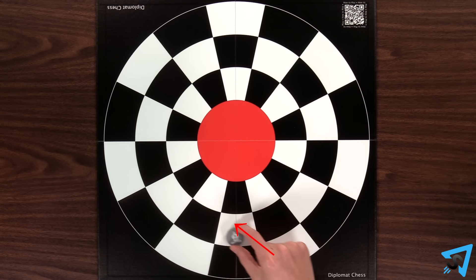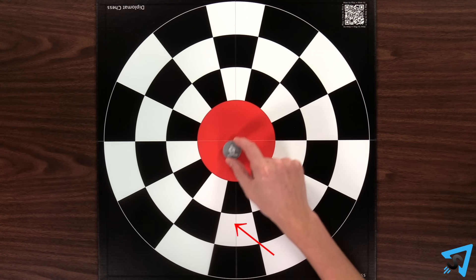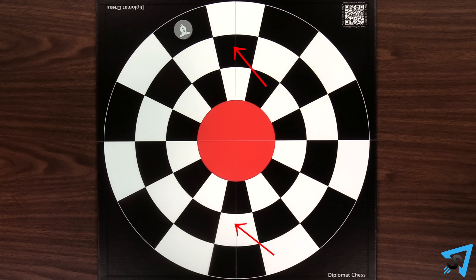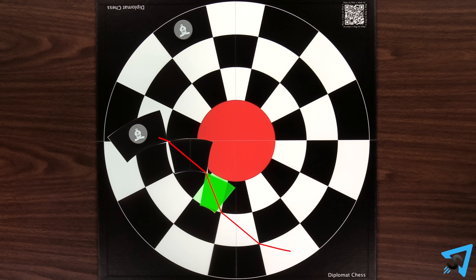To do so, the bishop travels in a straight line across the center to the opposite color, then diagonally in the same diagonal direction that it began the move with. It is as if the two adjacent spaces of the center are the same space.